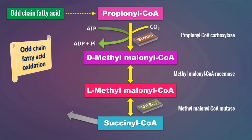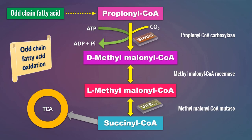Succinyl-CoA is an intermediate of the citric acid cycle, so it can directly enter the TCA cycle. As we also studied in carbohydrate metabolism, the TCA cycle is anaplerotic, meaning its intermediates can be utilized for the formation of some important compounds, and at the same time those intermediates can be replenished by other compounds. This is one example where succinyl-CoA can be utilized for the formation of heme along with glycine, and at the same time succinyl-CoA can be replenished by catabolism of odd chain fatty acids.